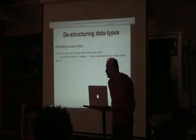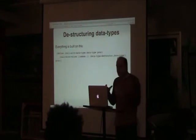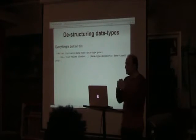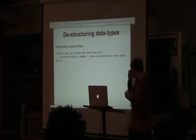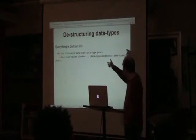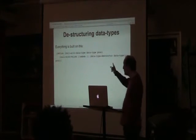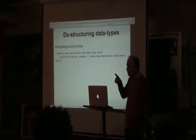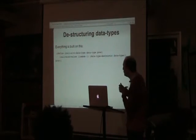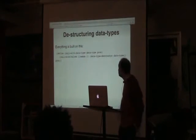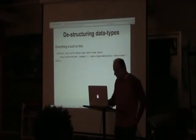For destructuring data types, I have a function called call-with-data-type. It takes two arguments: the data type you want to deconstruct, and a procedure. It takes the data type and passes the four elements — type-info, constructor, predicate, and deconstructor — to your procedure.